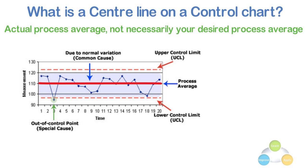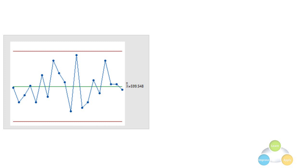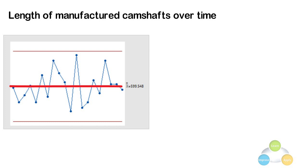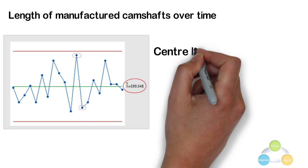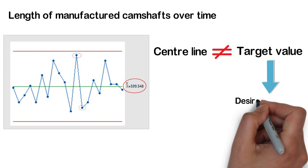Use the center line to observe how the process performs compared to the average. If a process is in control, the points will vary randomly around the center line. For example, this X bar chart displays the length of manufactured camshafts over time. The center line shows the process mean. The subgroup means vary randomly around the process mean. Do not confuse the center line with the target value of your process. The target is your desired outcome, not the actual outcome.